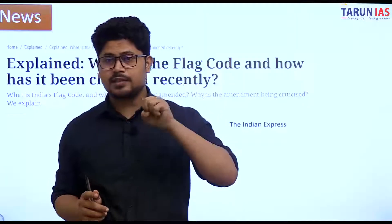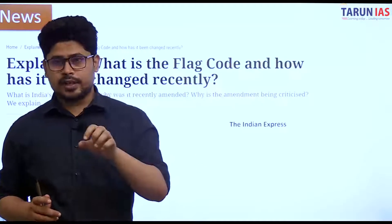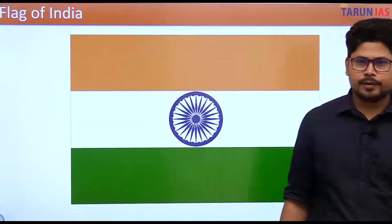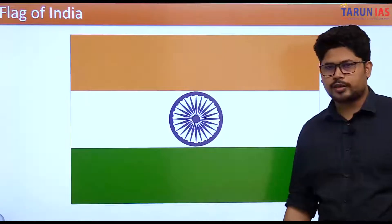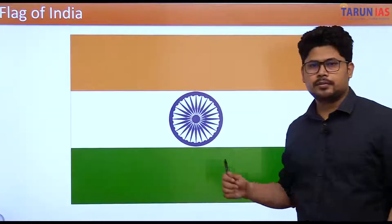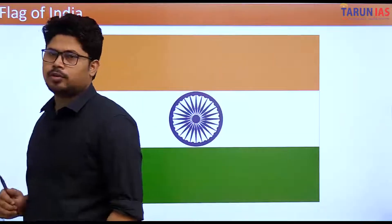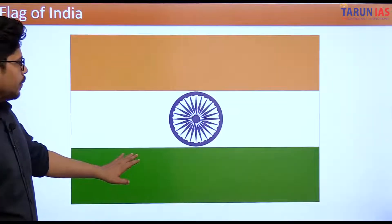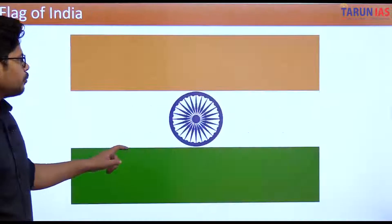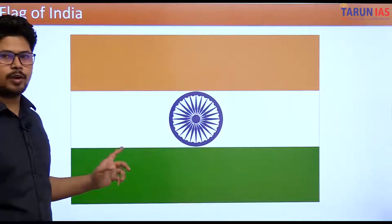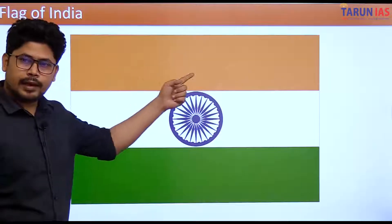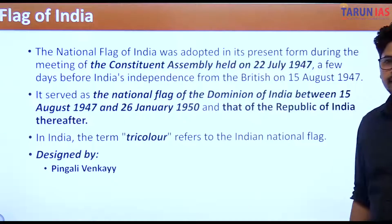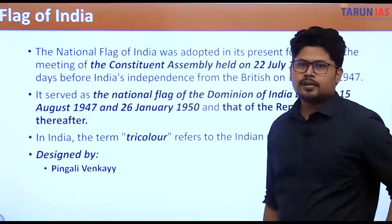Let's look at what the Flag Code is and the recent changes brought to facilitate the Har Ghar Tiranga scheme. The flag of India has an Ashok Chakra, a saffron stripe on top, a white stripe in the middle, and a green stripe at the bottom. One important point: the flag of India should always be rectangular — it cannot be square — and the ratio of length to breadth should be 3:2.